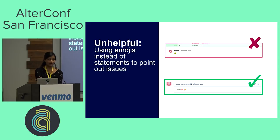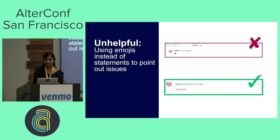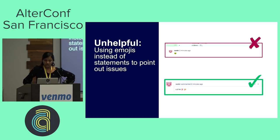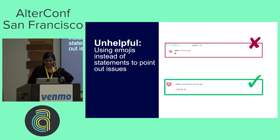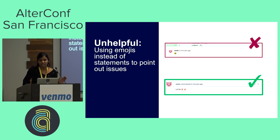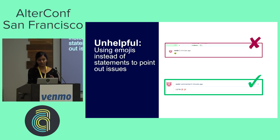I've seen people use the thumbs down or puke emoji to highlight issues. Using emojis instead of statements to point out issues is as unhelpful as sarcasm — they are cryptic and easy to misconstrue, they waste people's time, and you should not be having visceral reactions to people's coding mistakes anyway. It's just better to use your words, make statements, and give actionable advice. However, emojis can be fun — a thumbs up or hooray emoji to signify that the code looks fine is not an issue and not what I'm trying to discourage.